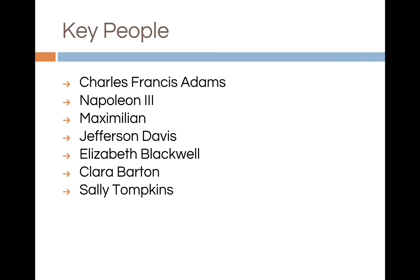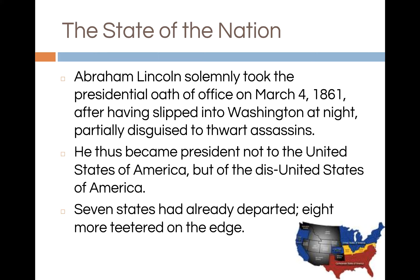Abraham Lincoln solemnly took the presidential oath of office on March 4, 1861. Because his election was causing so much animosity between the North and the South, he had to slip into Washington, D.C. at night, partially disguised in order to thwart assassination attempts. He thus became president not of the United States of America, but of the dis-United States of America.